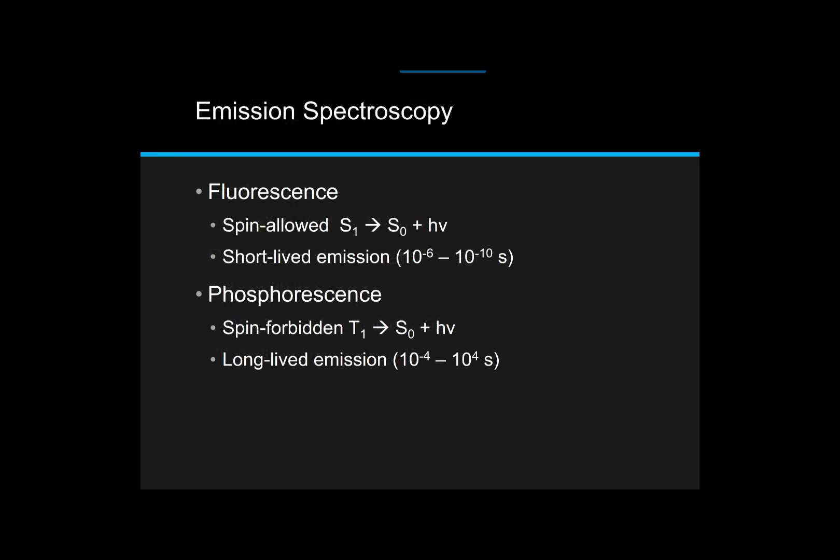If you recall, emission spectroscopy is the general term that we use to describe those types of spectroscopy in which we probe the light emitted by an excited chemical compound. In our earlier podcast, we talked about two specific types of emission, specifically fluorescence and phosphorescence, and it was the spin-allowedness of the LUMO-HOMO transition that formally distinguishes these two types of emission.